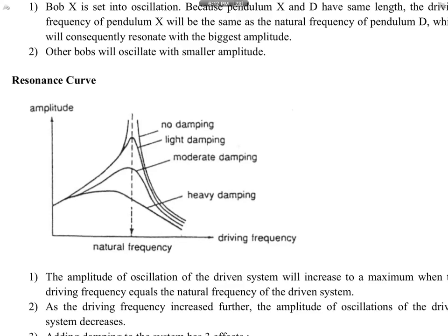To represent resonance graphically, we use the resonance curve, which shows how amplitude varies with the driving frequency. Imagine the amplitude is how high you swing and the frequency is how often you're being pushed. There are multiple curves on the graph, each representing a different degree of damping.